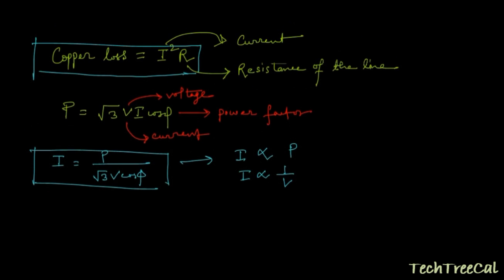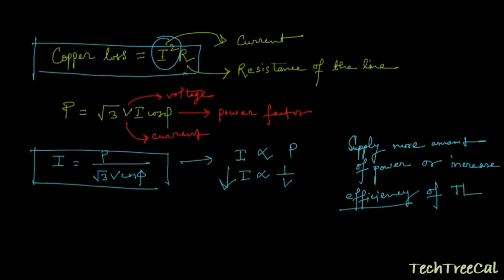So whenever we are transferring it through the transmission line, it is passing through this copper loss. The value of this copper loss is squarely proportional with current. So if I am decreasing the value of this current, then I am actually able to supply more power or increase the efficiency of this transmission line.